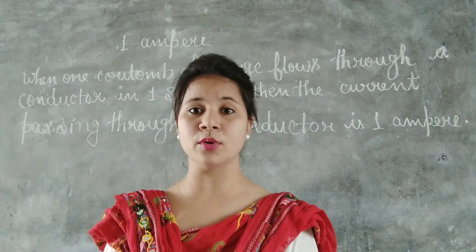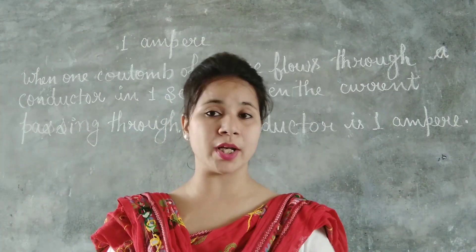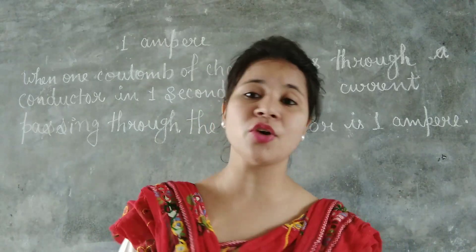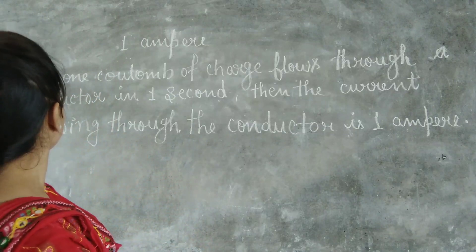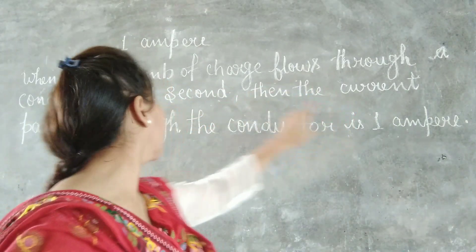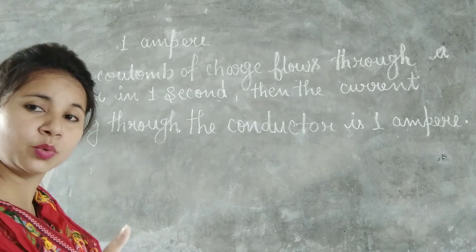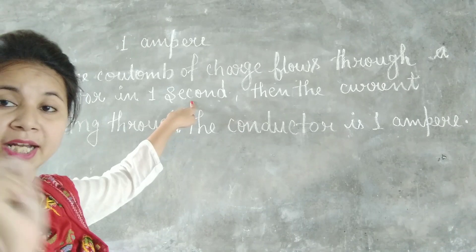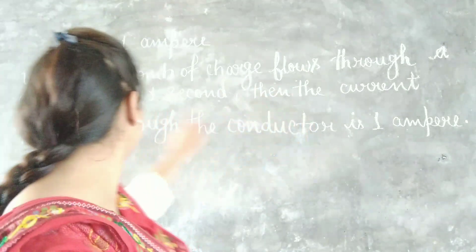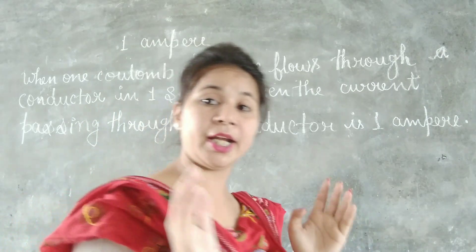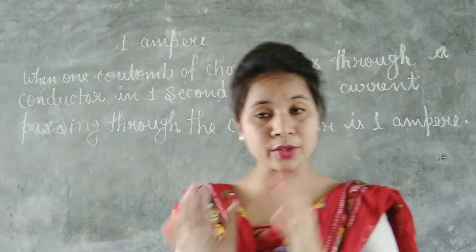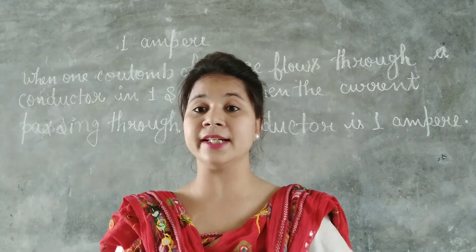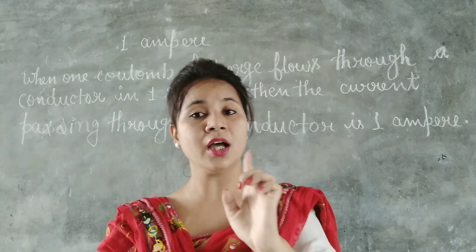We are going to discuss the definition of 1 Ampere, which is the SI unit of electric current. The definition of 1 Ampere is: when 1 coulomb of charge flows through a conductor in 1 second, then the current passing through the conductor is 1 Ampere. It means that when 1 coulomb of charge passes through any area of cross section in 1 second, the current is said to be 1 Ampere.